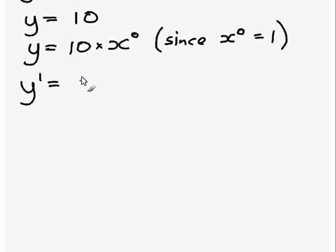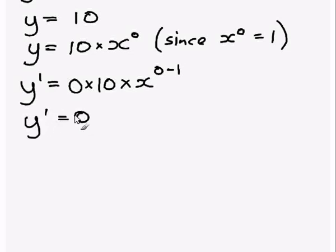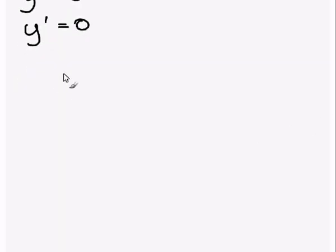So y' is going to equal, well, we put the 0 out in front, multiply that by the 10, multiply that by the x, and we reduce the power of x by 1. Now this is pretty simple. When you multiply anything by 0, the answer is 0. So what we've just shown is that when you find the derivative of a constant, which doesn't have any x's in it or anything, the answer is 0.